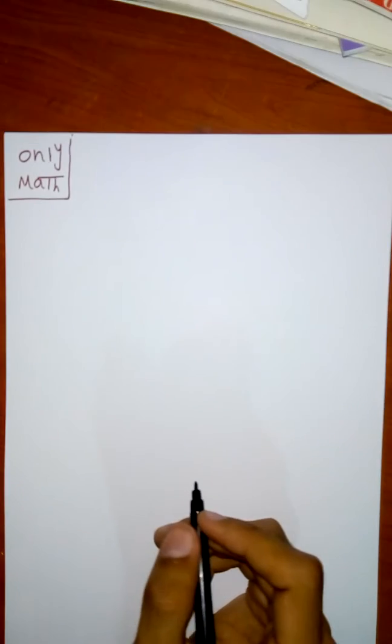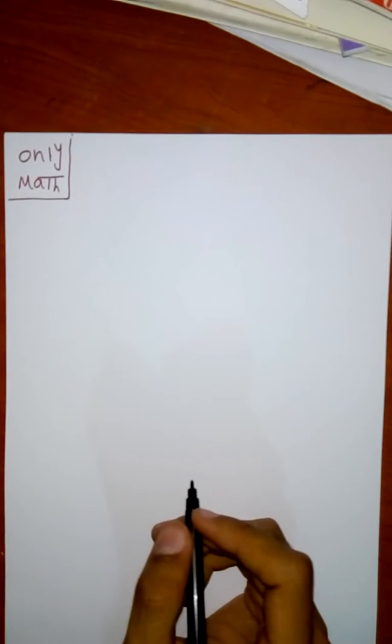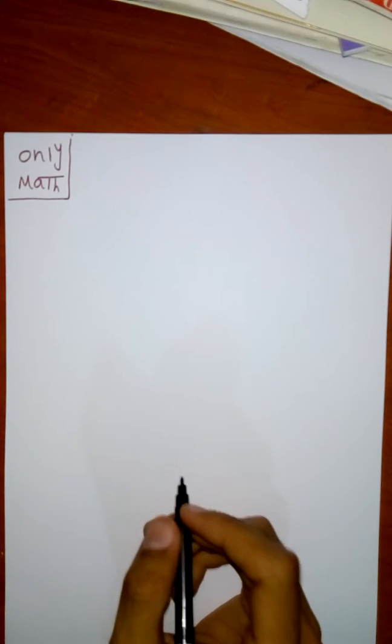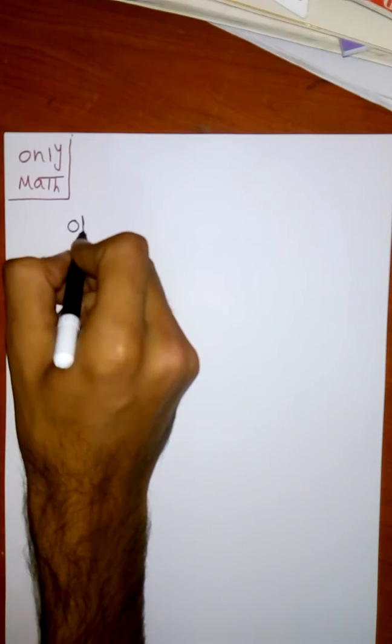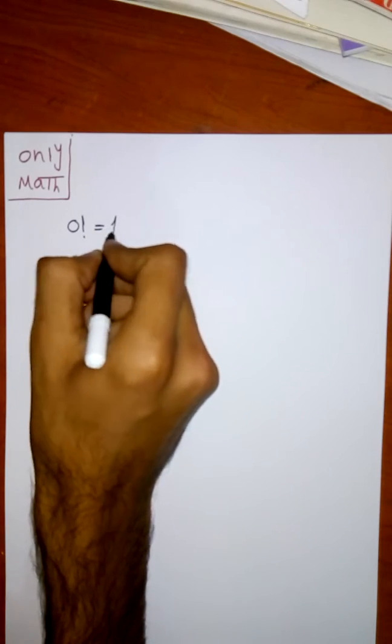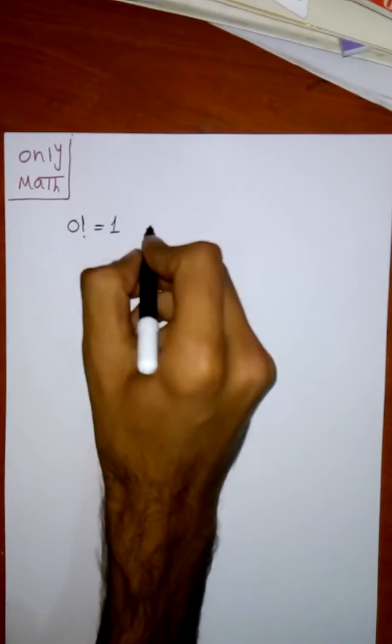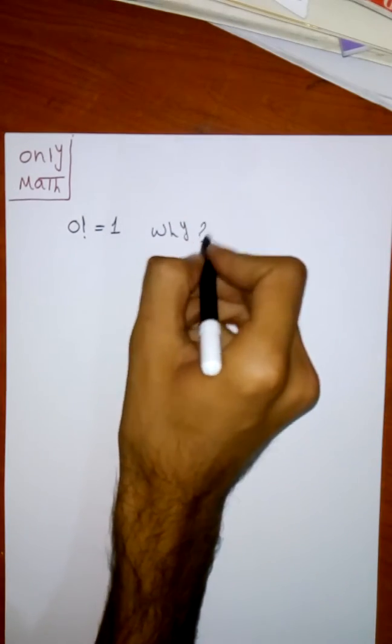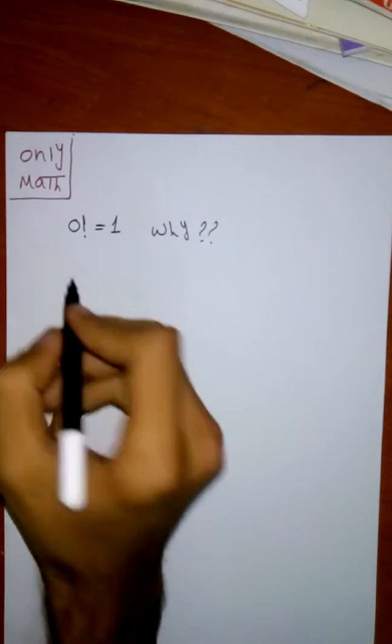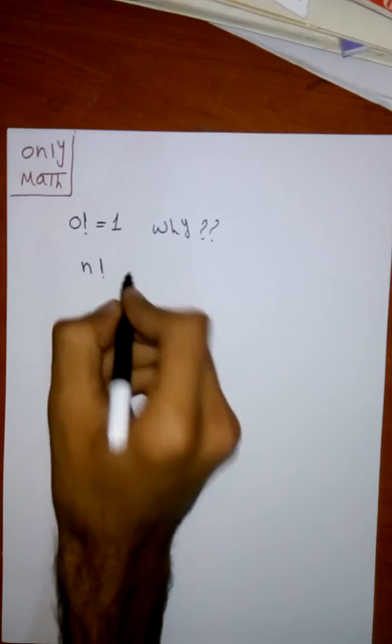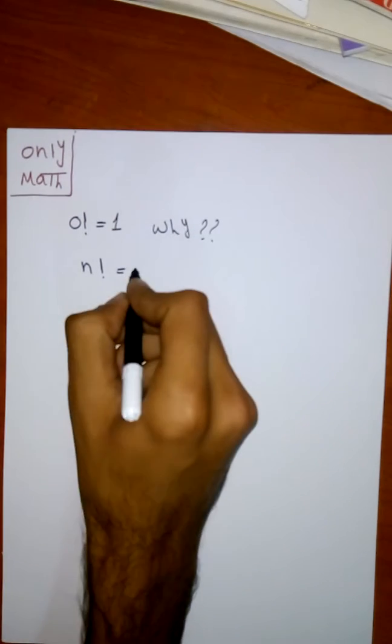Hello everybody, today is our first video on our YouTube channel. We want to talk about why zero factorial equals one. Let me tell you something. We have a rule that states factorial n equals n times n minus one factorial.